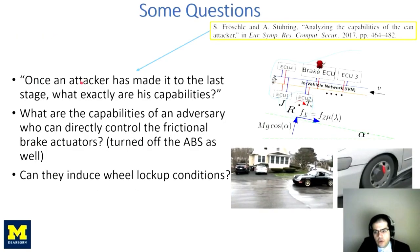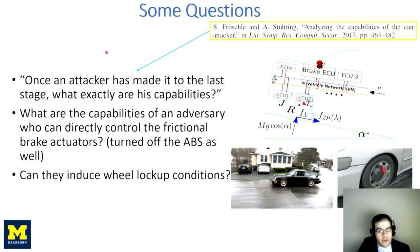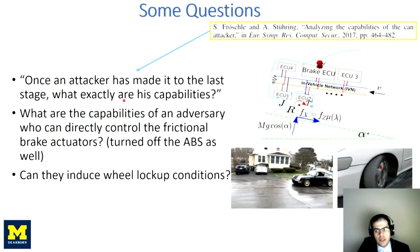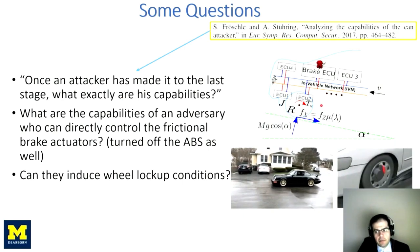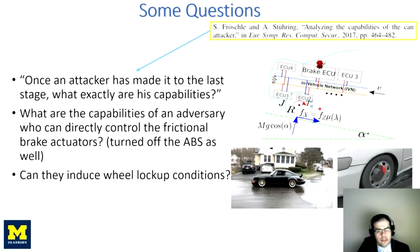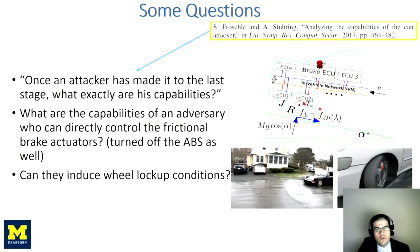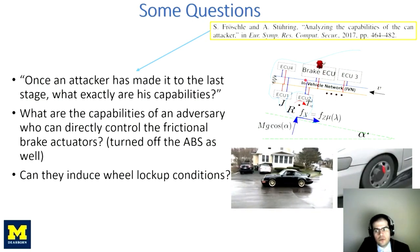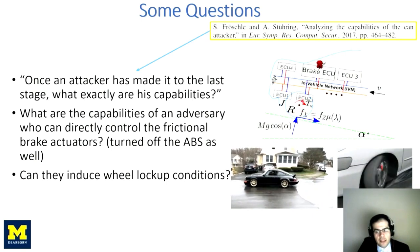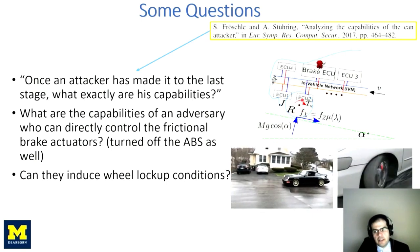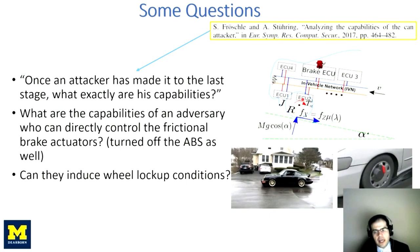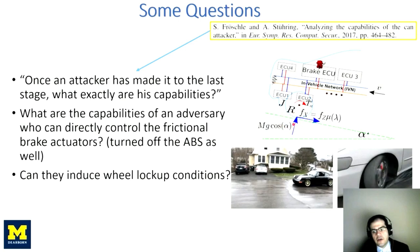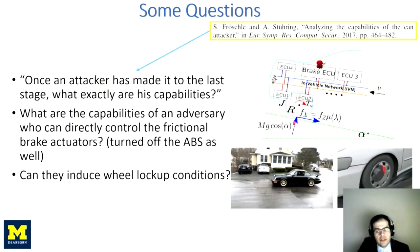In this work, we answer a very important question that once an attacker has made it to the last stage, what exactly are his capabilities? In particular, we address the question of what are the capabilities of an attacker who can directly control the frictional brake actuators, while assuming that the ABS has been turned off as well, and see whether they can cause a serious physical threat in terms of inducing wheel lockups.